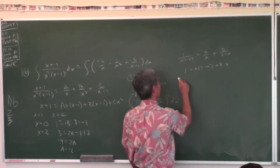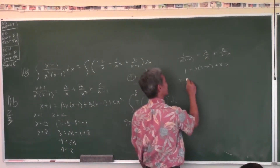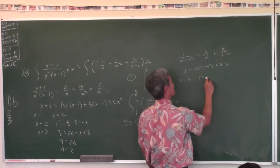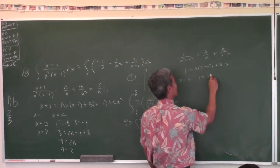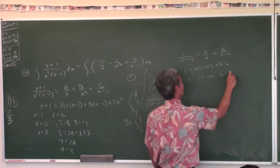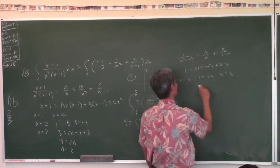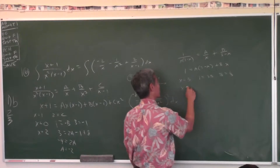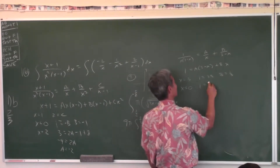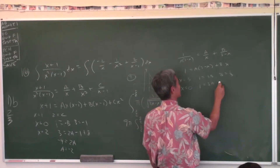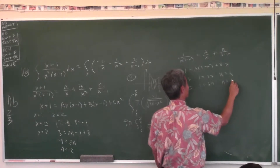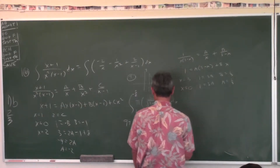A good number to plug in is 3: you get 1 equals 0 plus 3B, so B equals 1/3. Plug in 0: you get 1 equals 3A plus 0, so A equals 1/3.